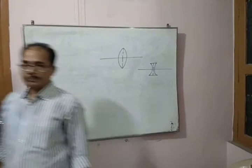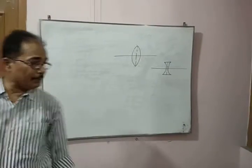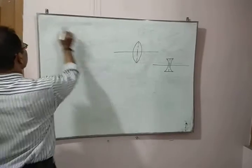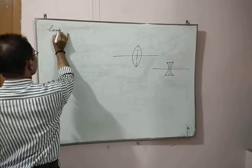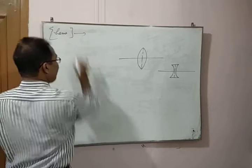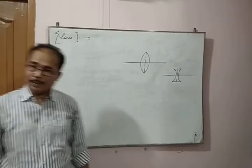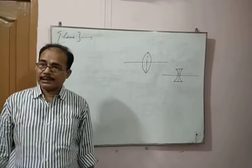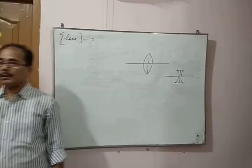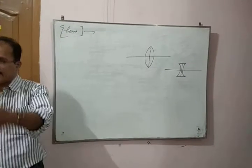Good morning children. Today we will discuss about the chapter lens in the light. A lens is defined as a transparent, refractive medium bounded by two curved surfaces which is generally spherical.